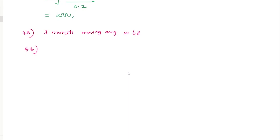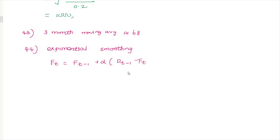For exponential smoothing over 5 months using the previous month's forecast, the answer is approximately 82. Using the formula correctly with demand and previous forecast values gives a result around 82. The forecast error check confirms the forecast is correct.